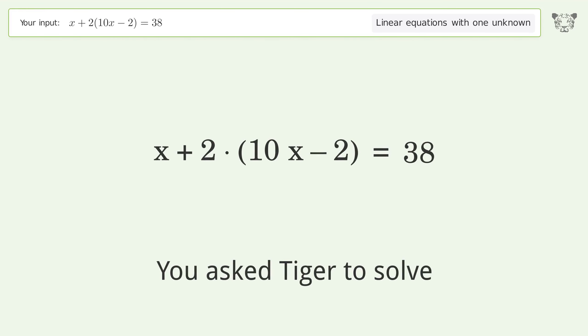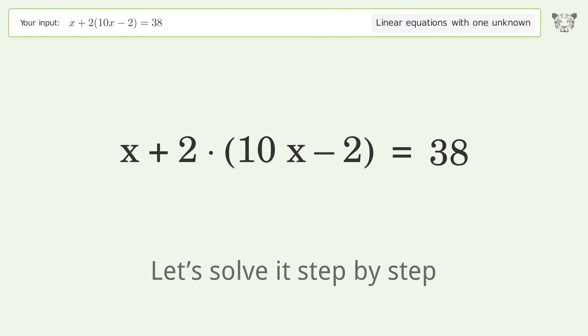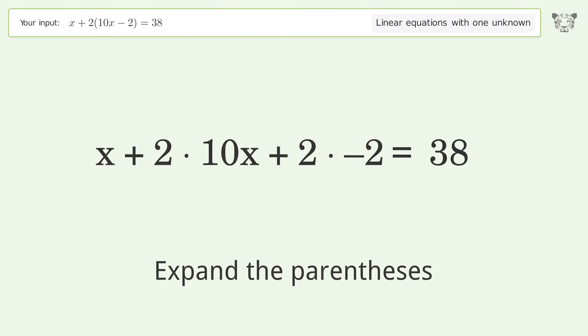You ask Tiger to solve this - it deals with linear equations with one unknown. The final result is x equals 2. Let's solve it step by step. Simplify the expression, expand the parentheses, multiply the coefficients, simplify the arithmetic.